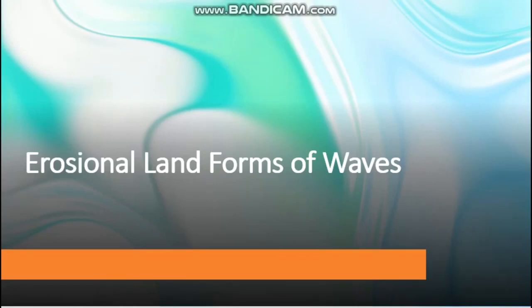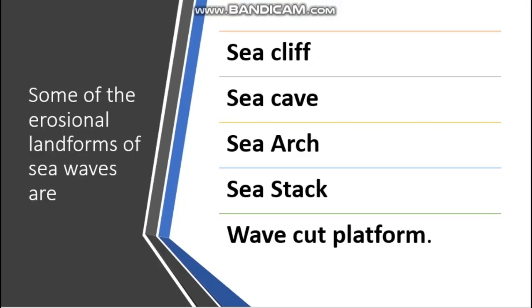Erosional landforms of waves and depositional landforms of waves — we are going to study. Some of the erosional landforms of sea waves are sea cliff, sea cave, sea arc, sea stack, and wave cut platform. One by one we can learn about each in detail.